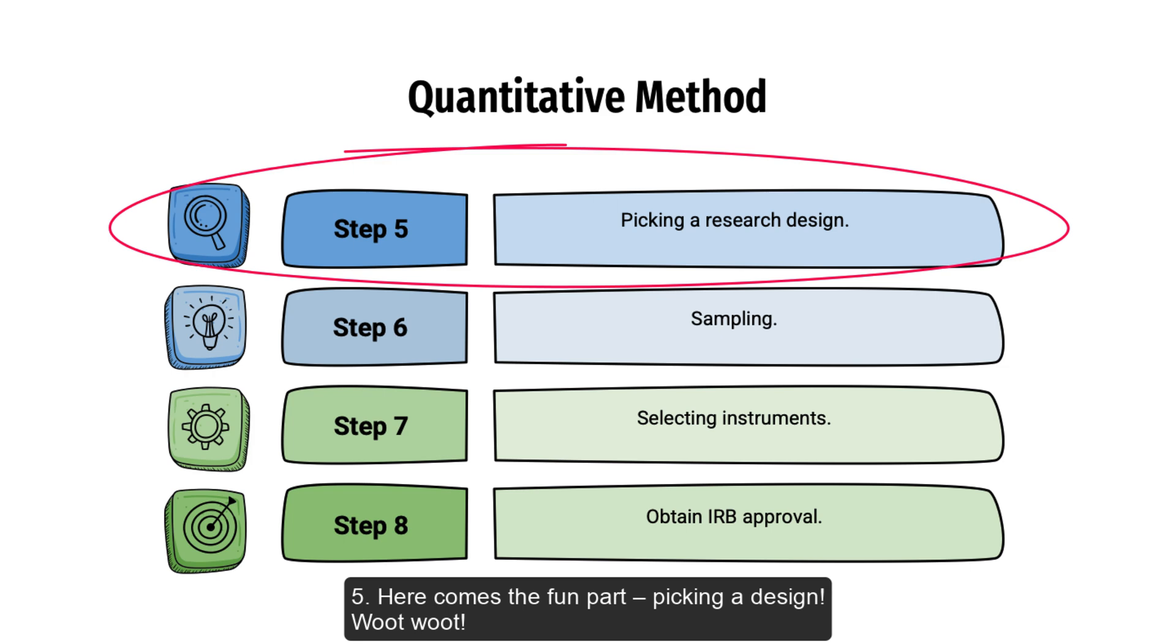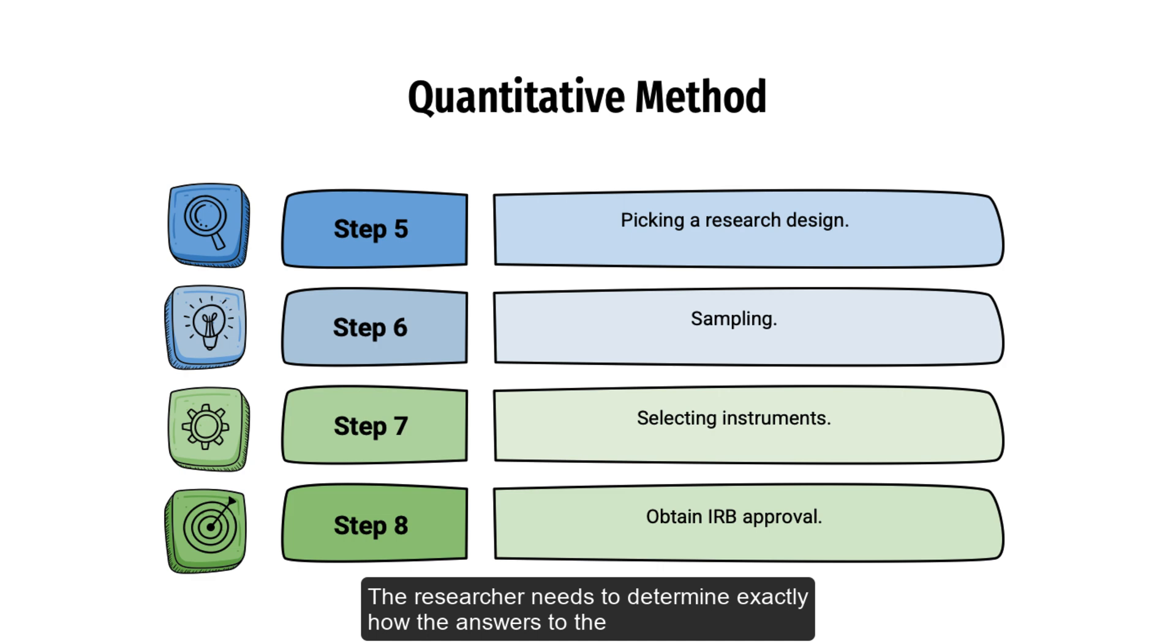Step 5. Here comes the fun part. Picking a design. The researcher needs to determine exactly how the answers to the research questions will be obtained. This step takes a lot of time. If it is not well thought out, the backbone of the study is weak and will crack.